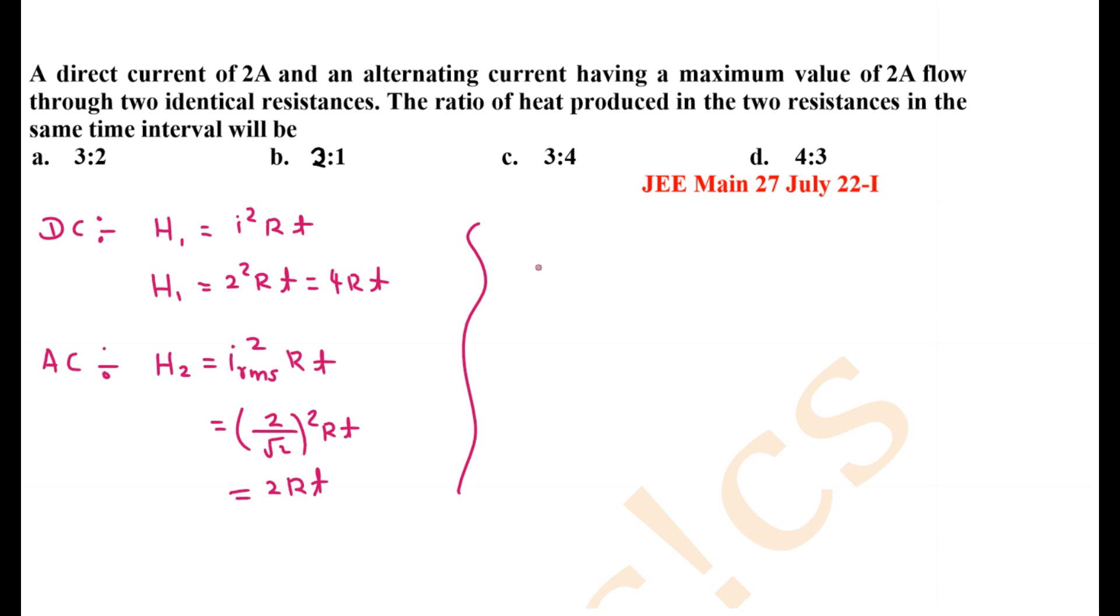The ratio H₁/H₂ equals 4RT divided by 2RT. RT cancels out. 4 divided by 2 is 2, so the answer is option B: 2:1.